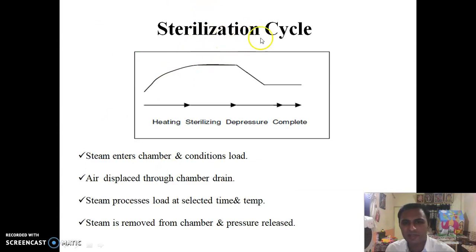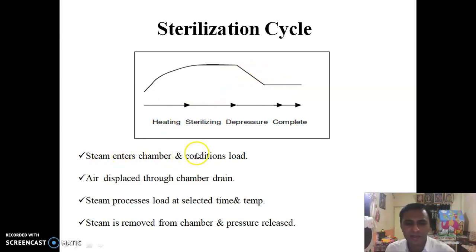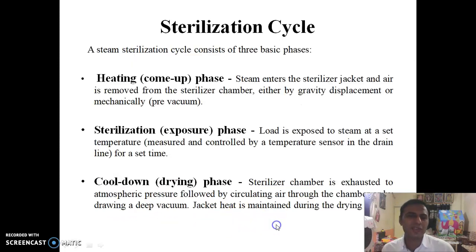The basic sterilization cycle consists of: first, heating takes place; then the main sterilization of material occurs; then depressurization and release of pressure complete the cycle. Steam enters the chamber, conditions the load, and air is displaced through the chamber drain. Steam processes the load at the selected time and temperature, then steam is removed from the chamber and pressure is released.